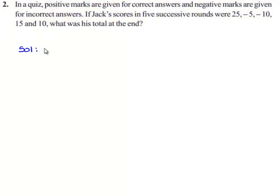First, we will note down the scores of Jack in the 5 successive rounds. They are 25, minus 5, minus 10, 15 and 10.